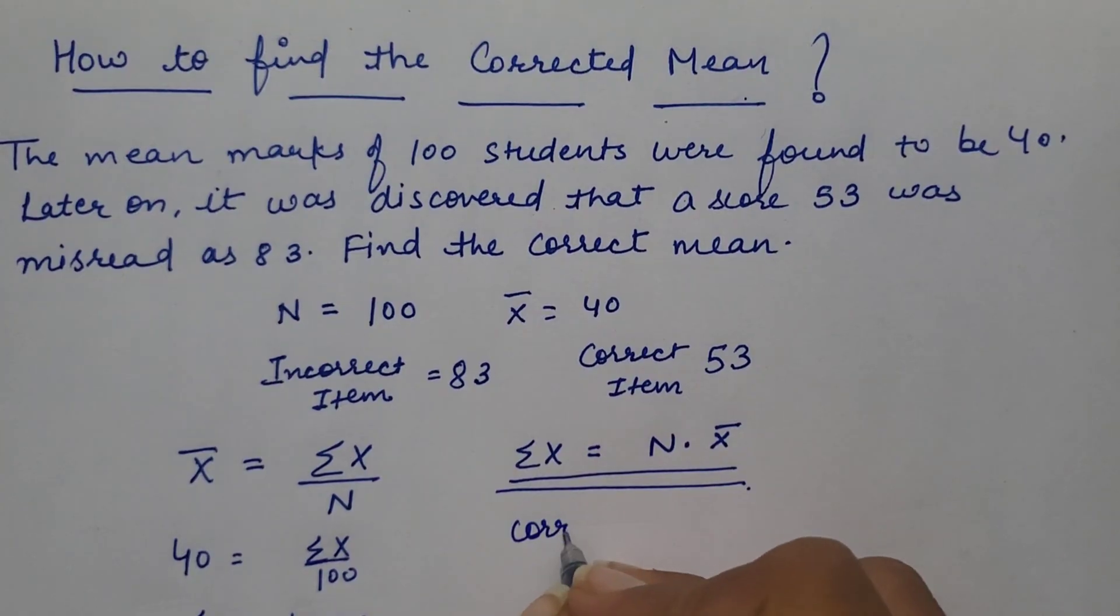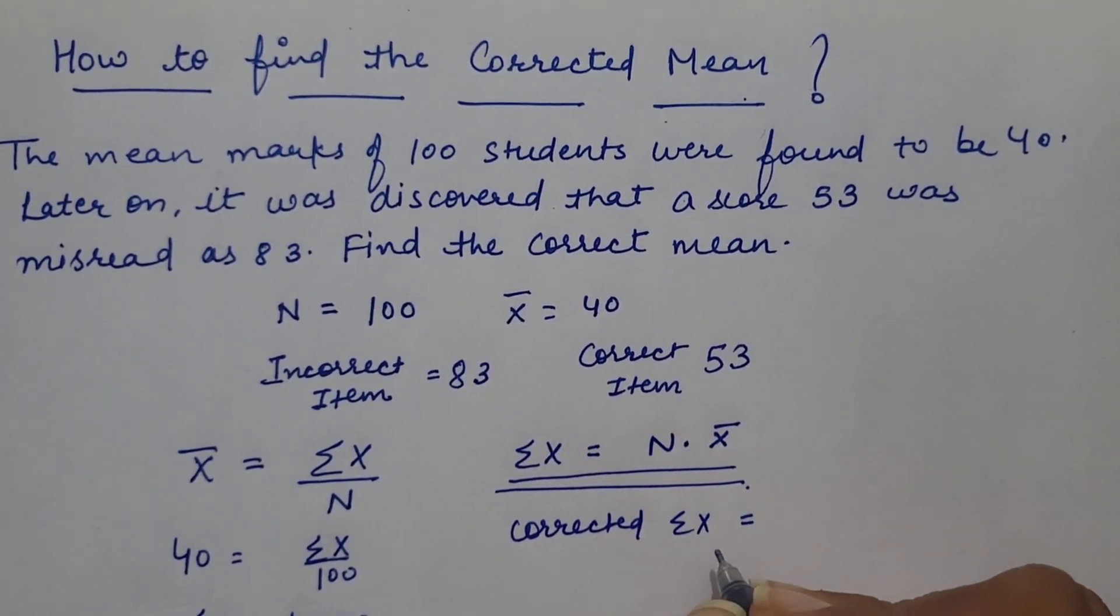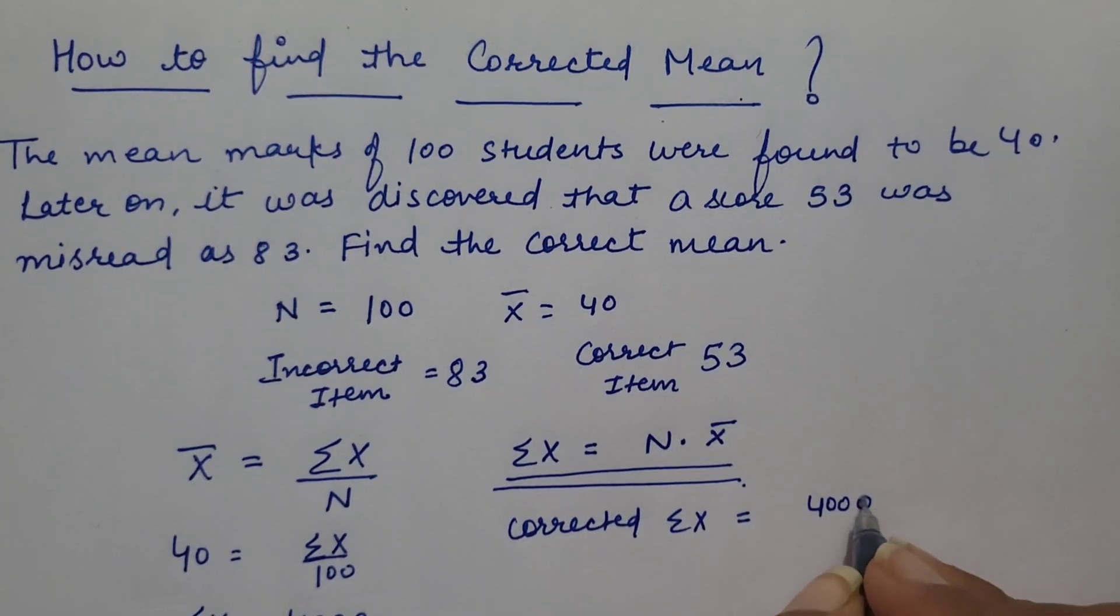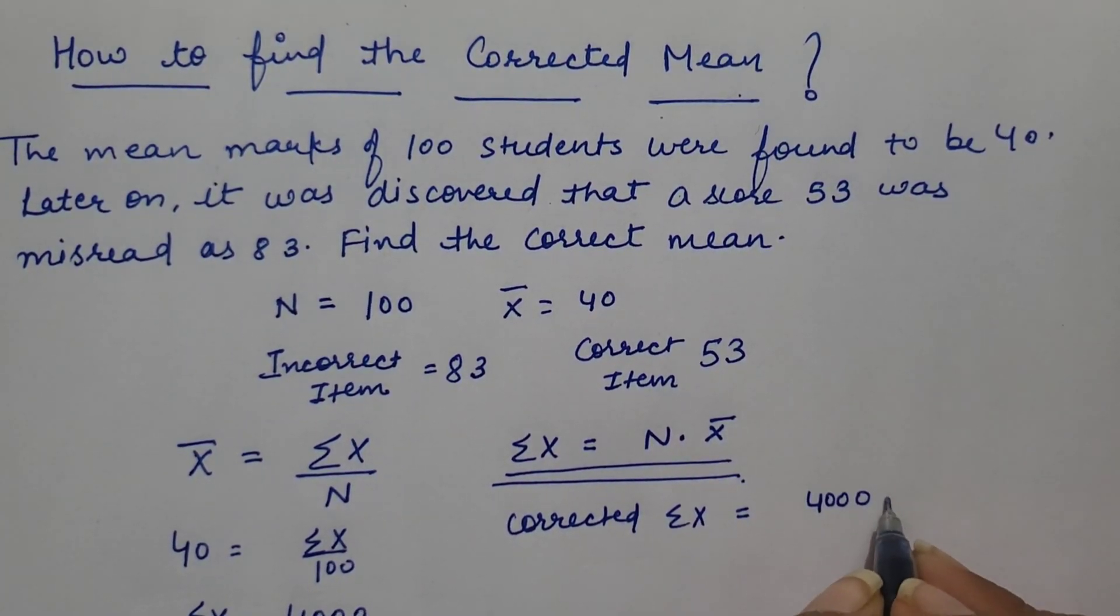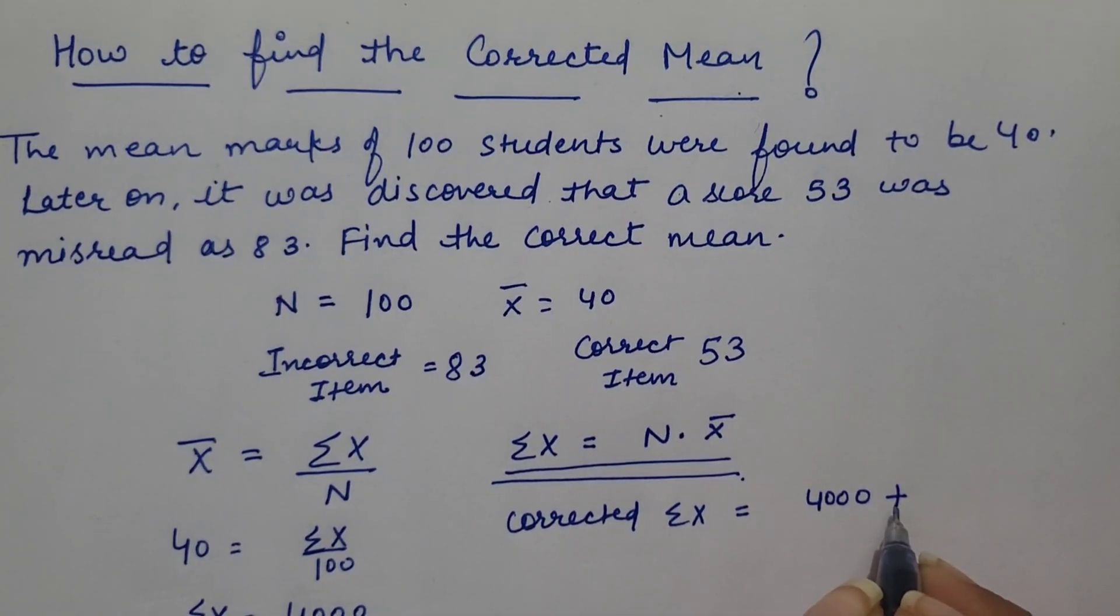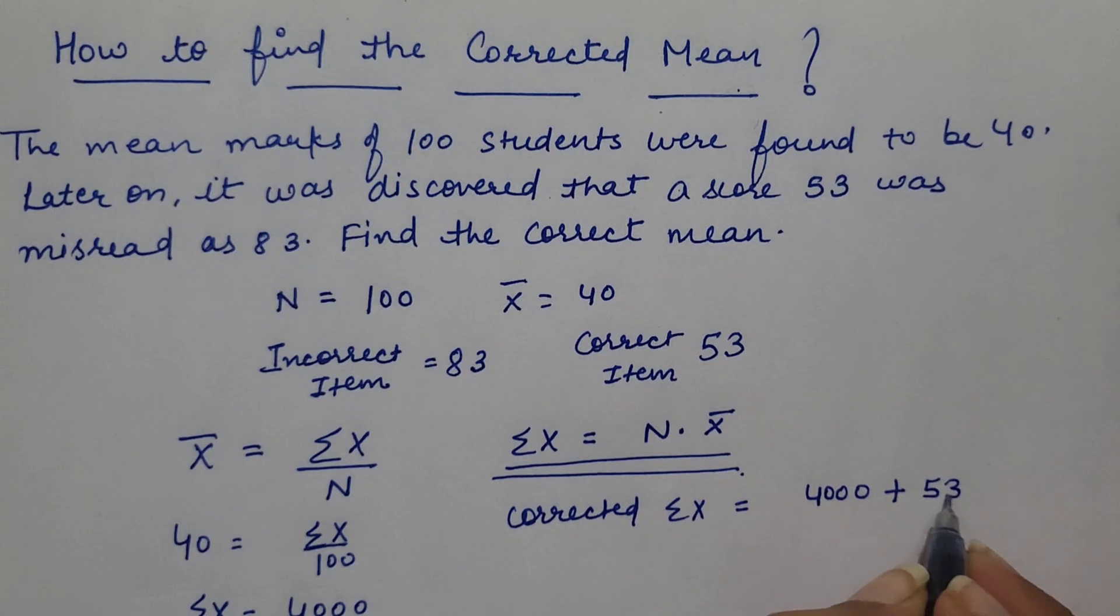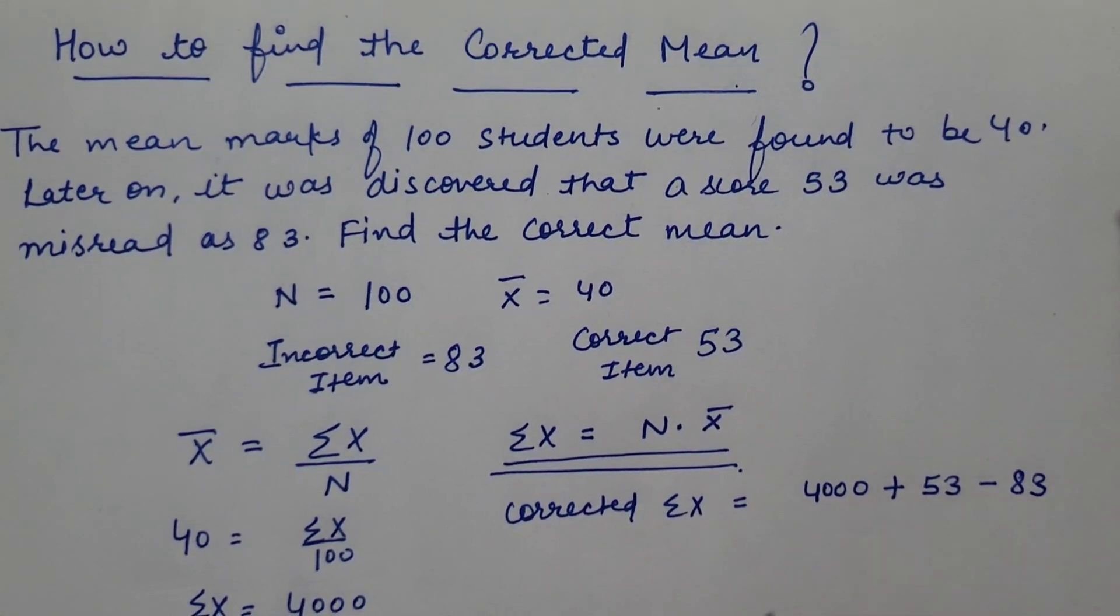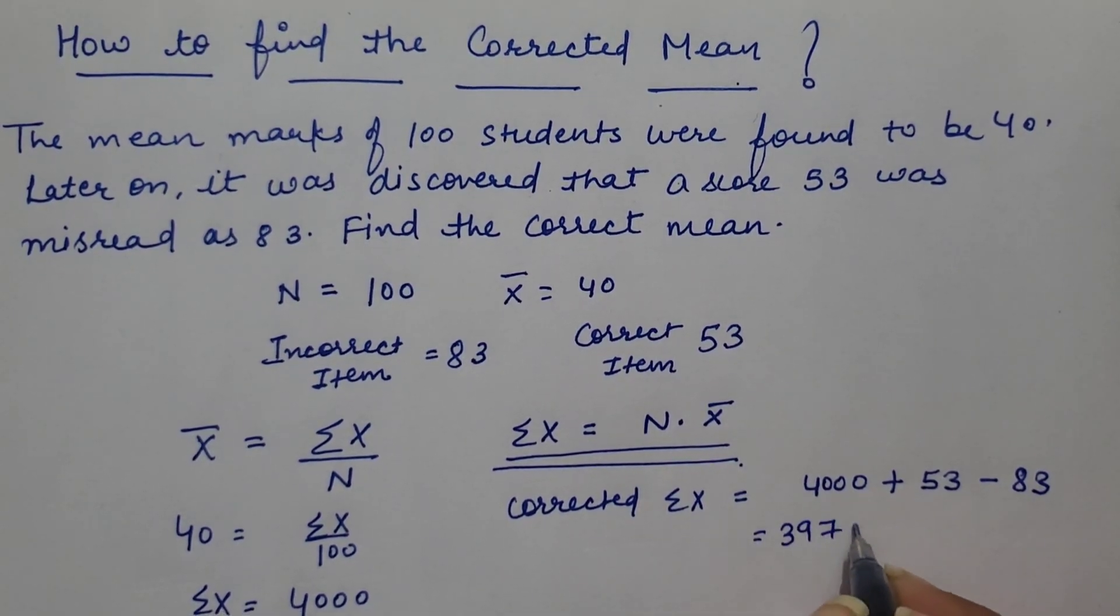We need to calculate corrected summation x. In order to calculate corrected summation x, you have to take 4000, that is summation x, plus add the correct score which was 53 and deduct the incorrect score which was 83. It would be 3970.